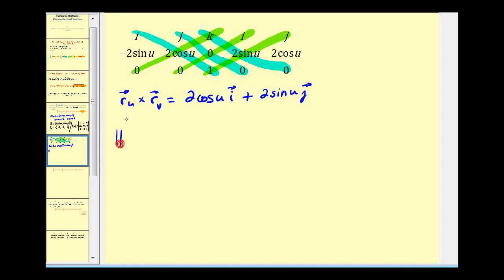So now let's determine the magnitude of this cross product. Four cosine squared u plus four sine squared u. If we factor out the four, we have cosine squared u plus sine squared u. That's equal to one. The square root of four would be equal to two. So let's go back and take a look at the problem again.